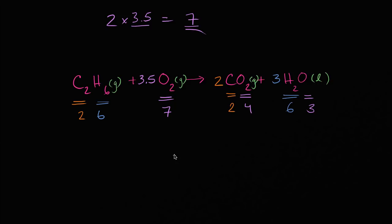But like we've seen in previous videos, it is not standard to leave a 3.5 here — it's a weird notion of three and a half molecules. We like to have whole numbers. So how do we ensure all whole number coefficients? We could just multiply everything by two. Then 3.5 becomes seven, one becomes two, two becomes four, and three becomes six.